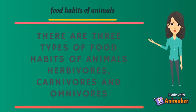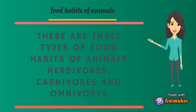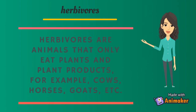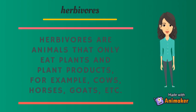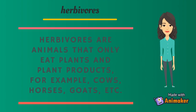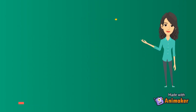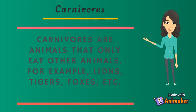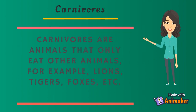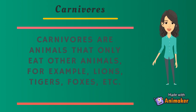There are three types of food habits of animals: herbivores, carnivores, and omnivores. Herbivores are animals that only eat plants and plant products, for example, cows, horses, goats, etc. Carnivores are animals that only eat other animals, for example, lions, tigers, foxes, etc.